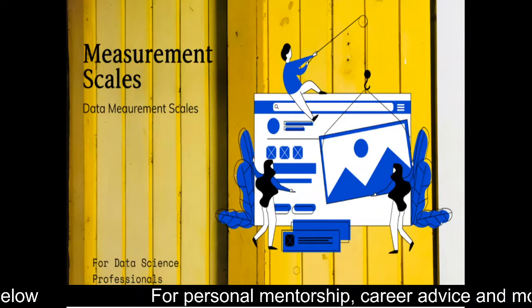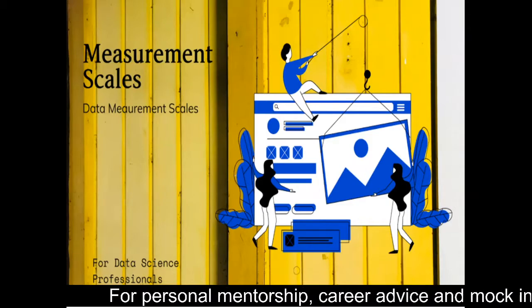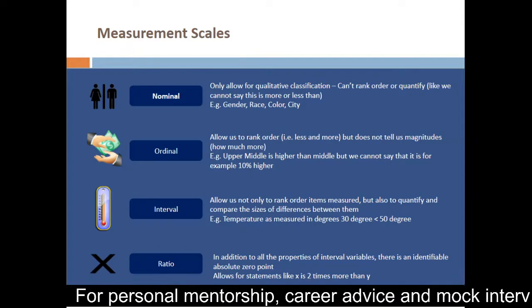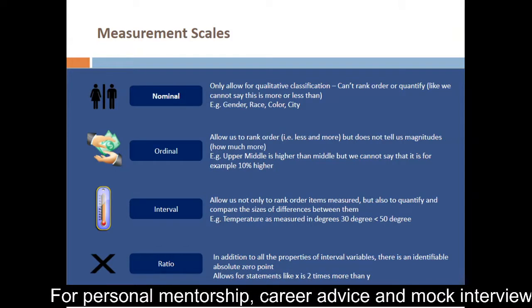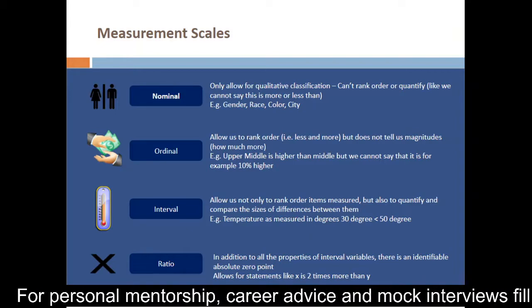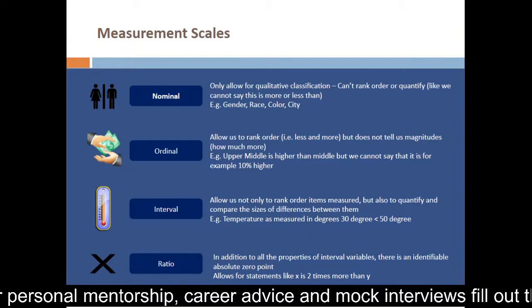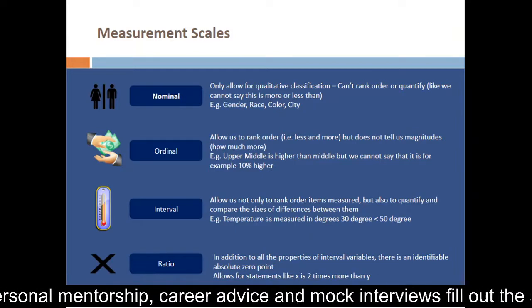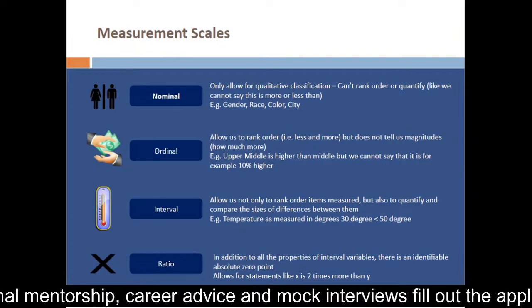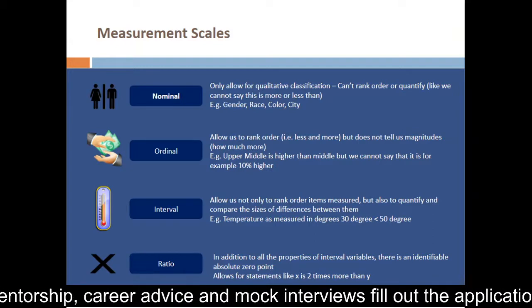Now let us look at what are the broad measurement scales that we have. The first one is a nominal measurement scale. Here, if you are looking at a qualitative classification and we are not able to rank order or quantify, for example we cannot say or use the term like X is more than or less than Y, then we are looking at nominal variables. Examples would be things like gender, race, color, or city. We cannot really order them.